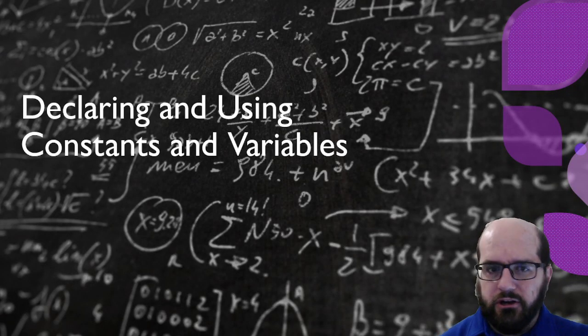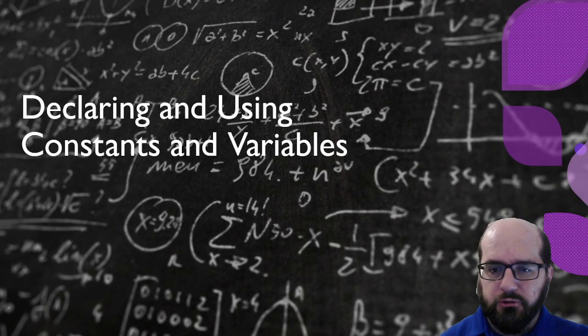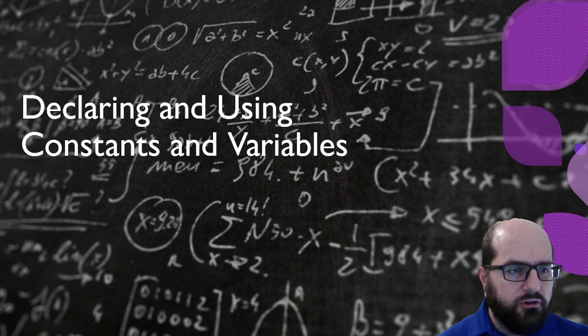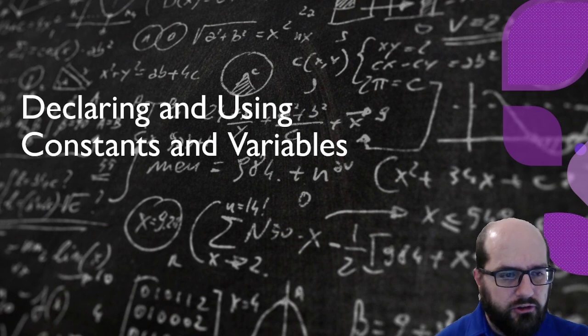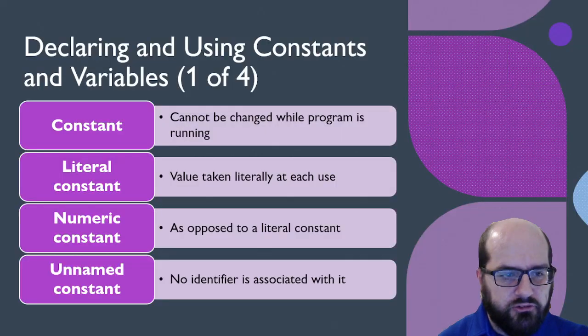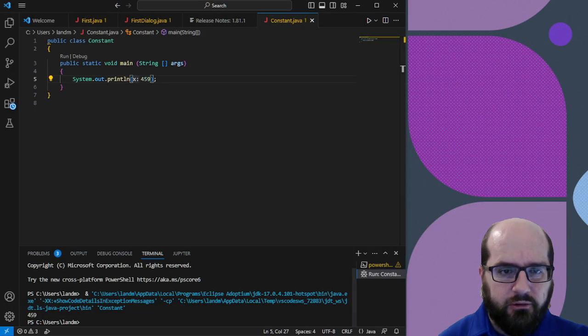Let's talk about how to declare and use constants and variables. First, I want us to look at the program we've used in the past, and that's the system.out.print program.